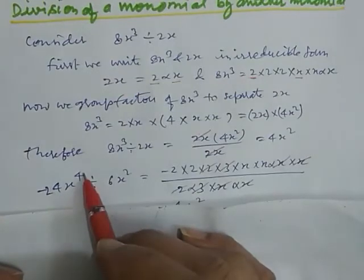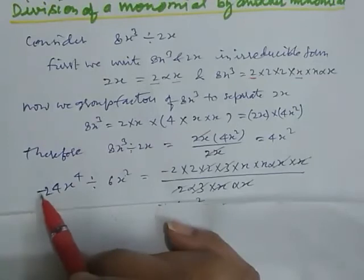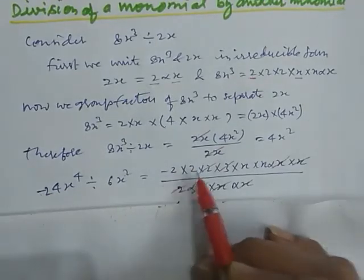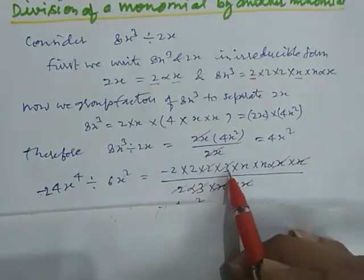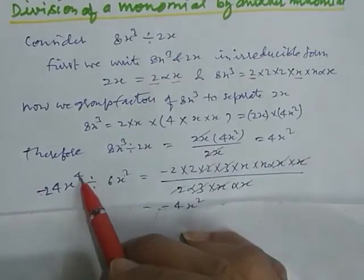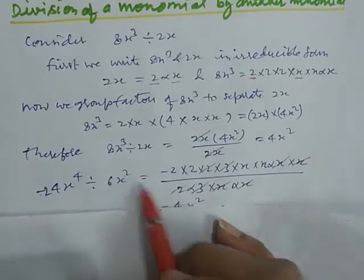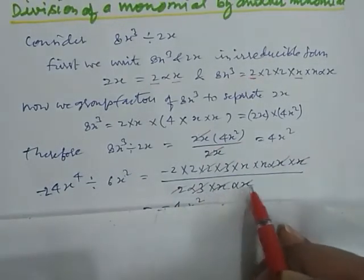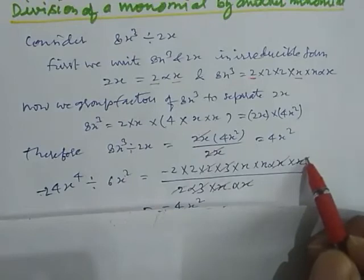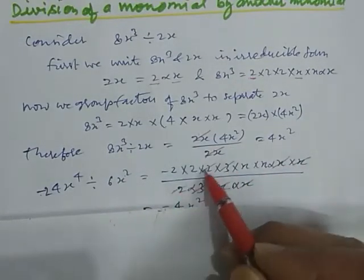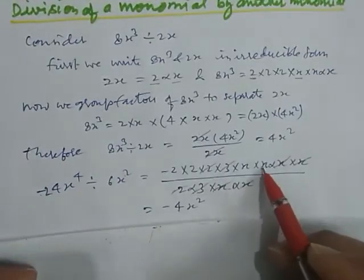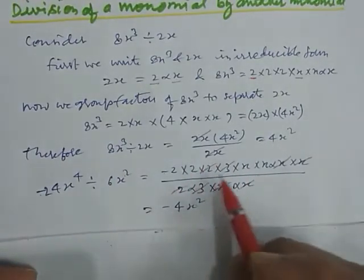Now we perform another example: minus 24x⁴ divided by 6x square. We directly factorize this part. Minus 24 equals minus 2 into 2 into 2 into 3, and x⁴ equals x into x into x into x. And 6x square equals 2 into 3 into x into x. This x cancels by this x, this x by this, this 3 by this, this 2 by 2. So what is left? Minus 2 into 2, that is minus 4, and x into x — x square. This way we get our result.